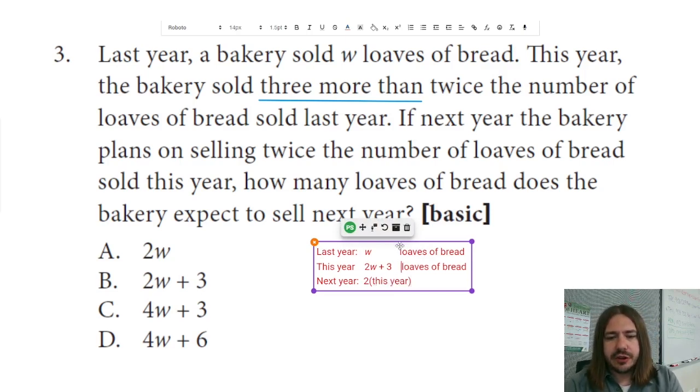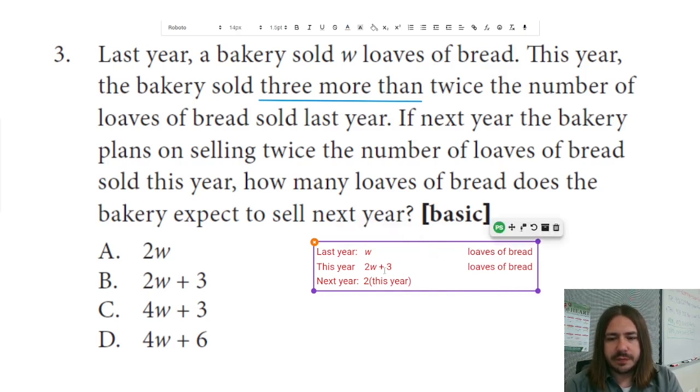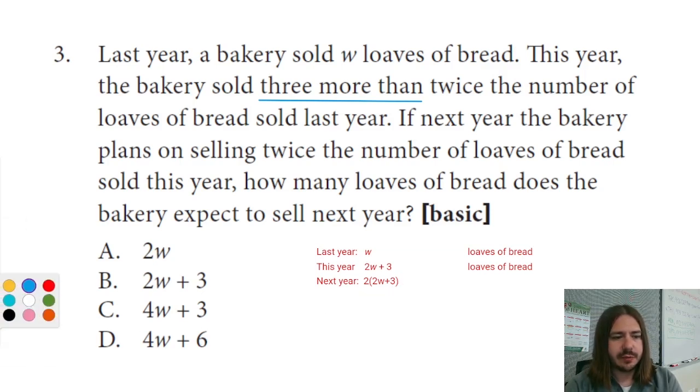Now this year, we already know how many we had, right? It was 2W plus 3. So instead of just writing this year, I'm going to write 2W plus 3. And that's that many loaves of bread. So this is going to be our answer. But as you can see, none of the answer choices look like this. So we do have to do a little bit of algebraic manipulation here.